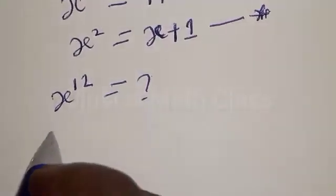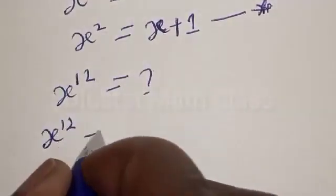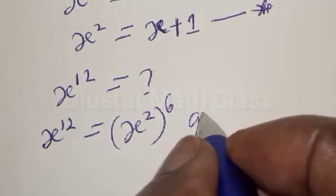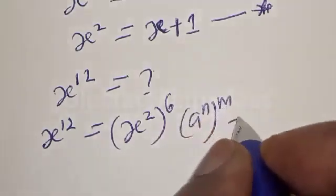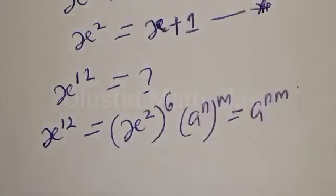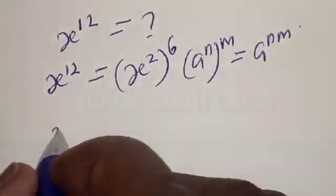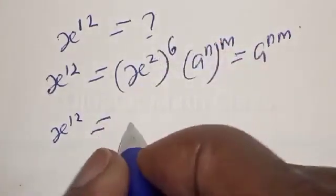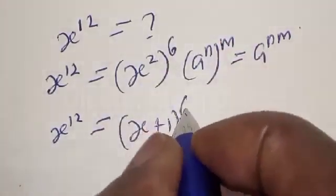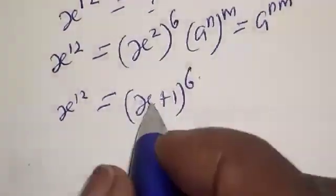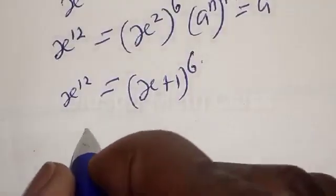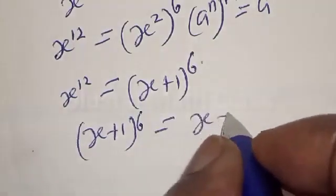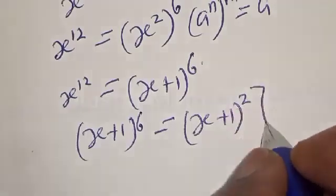From our question, s raised to power 12 can be expressed as s squared raised to power 6. Therefore, s raised to power 12 equals s squared raised to power 6. Since s squared equals s plus 1, this becomes s plus 1 raised to the power 6. And s plus 1 raised to the power 6 can also be expressed as (s plus 1) squared, then raised to the power 3.